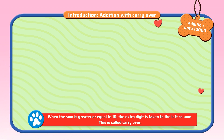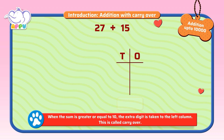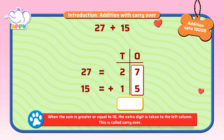Let's look at a simple example: 27 plus 15. We write it as tens and ones. We start adding the ones. 7 plus 5 is equal to 12.